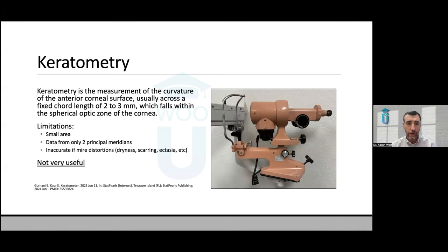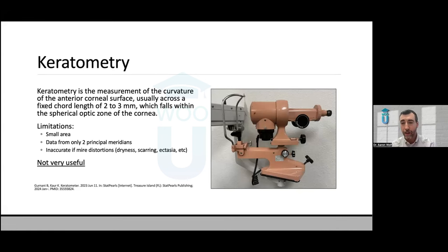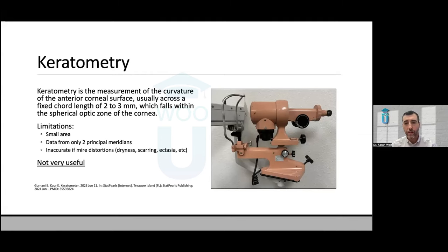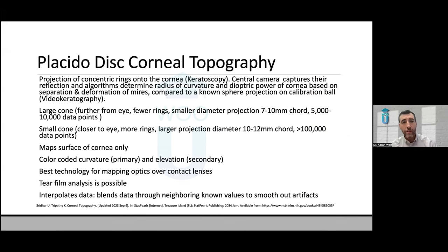Keratometry is not really used that much anymore. The picture shown is from a keratometer in my office — probably about a 50-year-old device that has not been turned on in over a decade. It only gives you two main principal meridians and only about two to three millimeters from the center of the cornea, so it's not great for contact lens fitting or for the diagnostic side of ectasia.